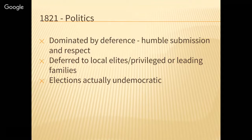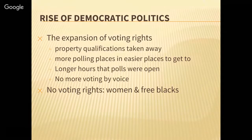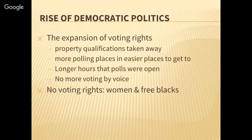But between 1820 and 1840, that actually changed. States started to see that it was elitist for some of these requirements, and they started taking away those qualifications — specifically property qualifications — so that whoever was white and male could actually vote without having to own property, because most people didn't. They also created more polling places that were easier to get to. Before, if you lived in West Fork, your polling place might be in Fayetteville, and you'd have to ride a horse or walk.